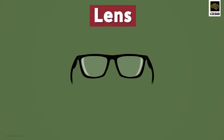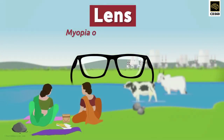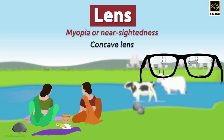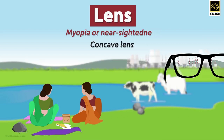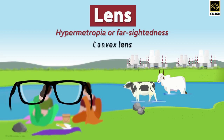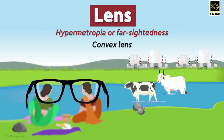We wear spectacles if we are suffering from certain eye defects. If one is suffering from myopia, or near-sightedness, we wear spectacles with concave lenses. If one is suffering from hypermetropia, or far-sightedness, we wear spectacles with convex lenses.